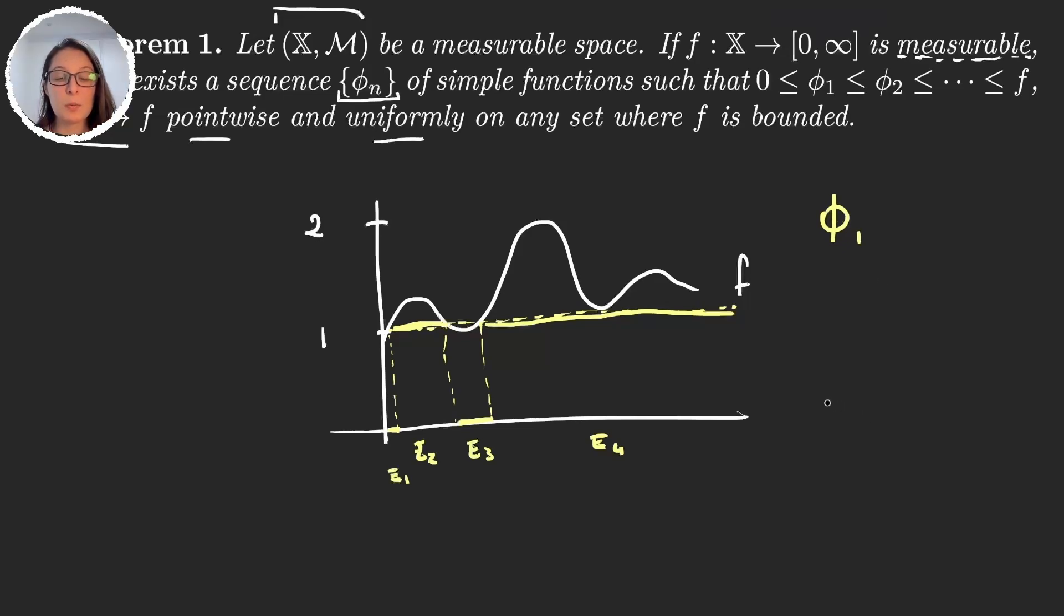Now let's build the second function. What we will do is divide each of these two intervals into one half. So here we have one half and three over two. Now when we look at this first interval here, the function is greater than one half, so it's going to take the value one half.